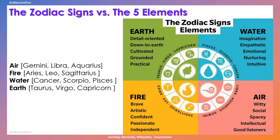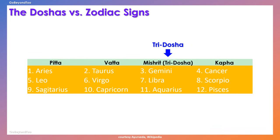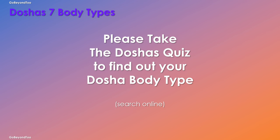This relates to the doshas. The pitta dosha relates to the fire signs: Aries, Leo, and Sagittarius. The vata dosha relates to Taurus, Virgo, and Capricorn. The kapha dosha relates to Cancer, Scorpio, and Pisces. Then we have the tridosha zodiac signs such as Gemini, Libra, and Aquarius. If you'd like to know what your dosha body type is, please take the online quiz — just Google 'dosha quiz online' and you'll be able to take it.